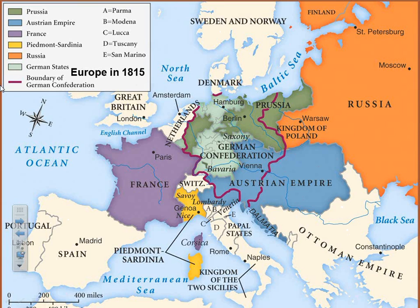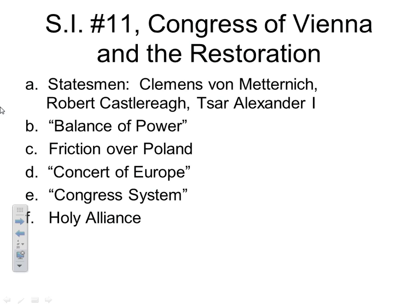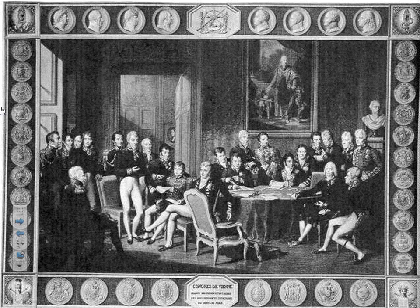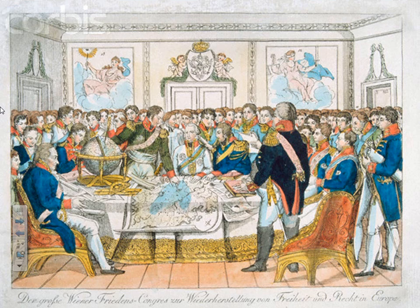Vienna is located here in the Austrian Empire. And really it was a party — it was certainly a political event and political diplomacy, but it was also a celebration of the defeat and demise of Napoleon.